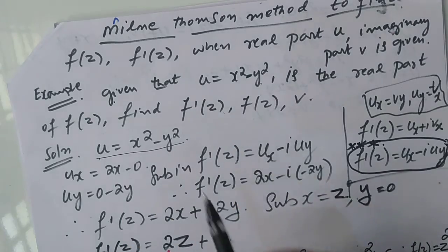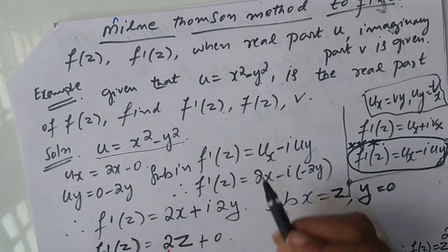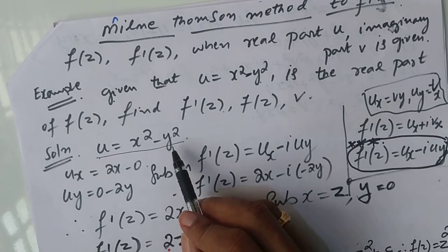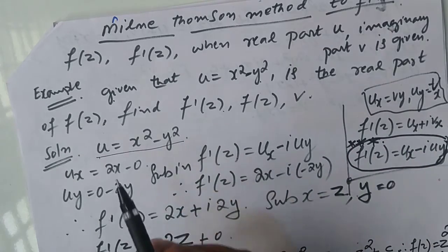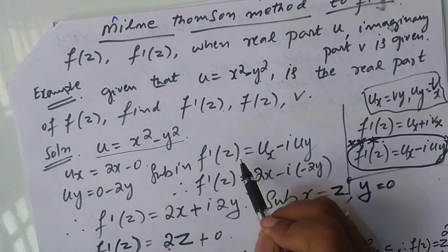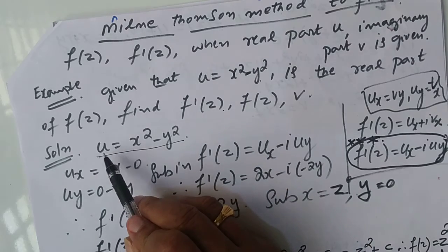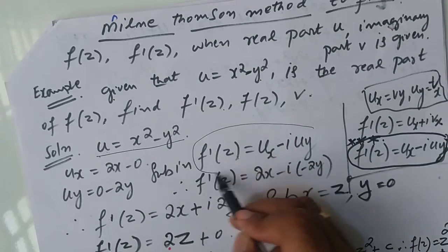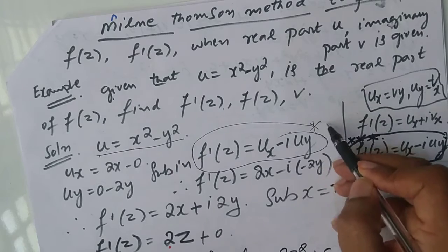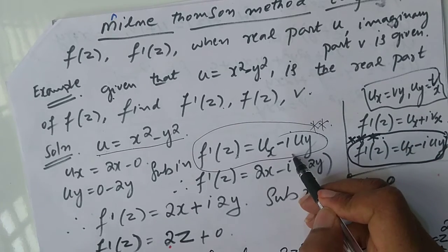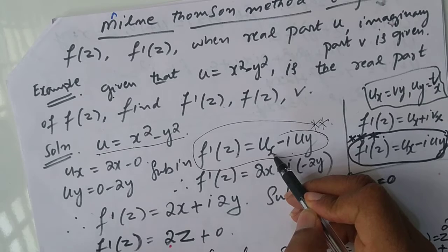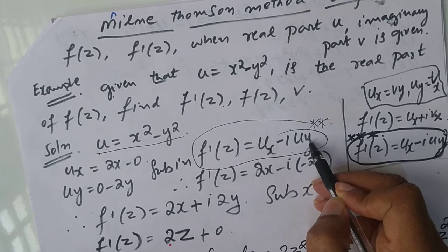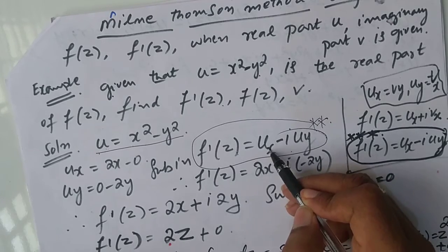When the imaginary part v is given, the formula for f'(z) was covered in the previous lecture. Now when the real part u is given, f'(z) is equal to ux minus i·uy. This is most important — you should remember this. From u, partially differentiate with respect to x to get ux, and with respect to y to get uy. Then substitute x = z, y = 0, and integrate.